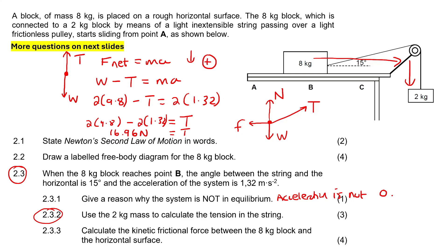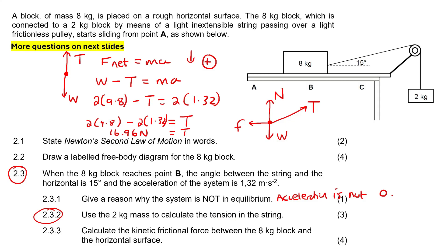I'm not going to give a direction for the tension. It is upward for the 2kg object, but it's different for the 8kg object. This tension in the rope is the same tension throughout, so the direction depends on which part of the rope you're talking about. On the memo they don't give a direction either, so just leave it as 16.96 Newtons.